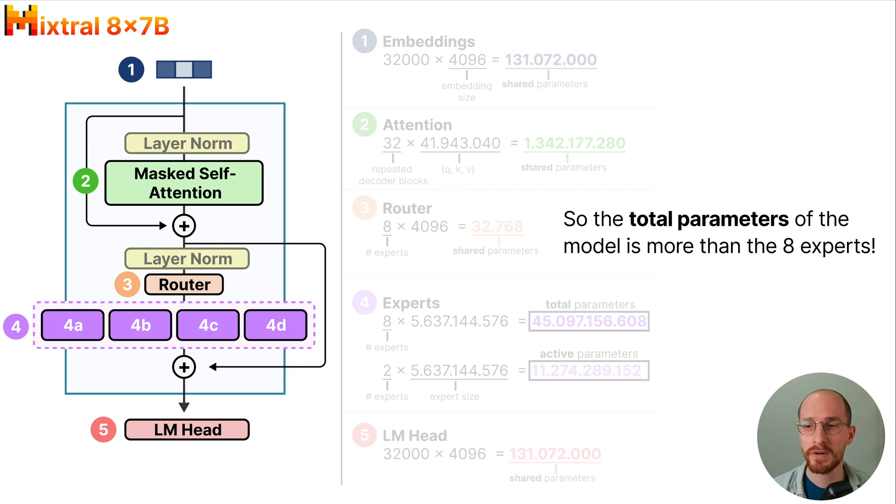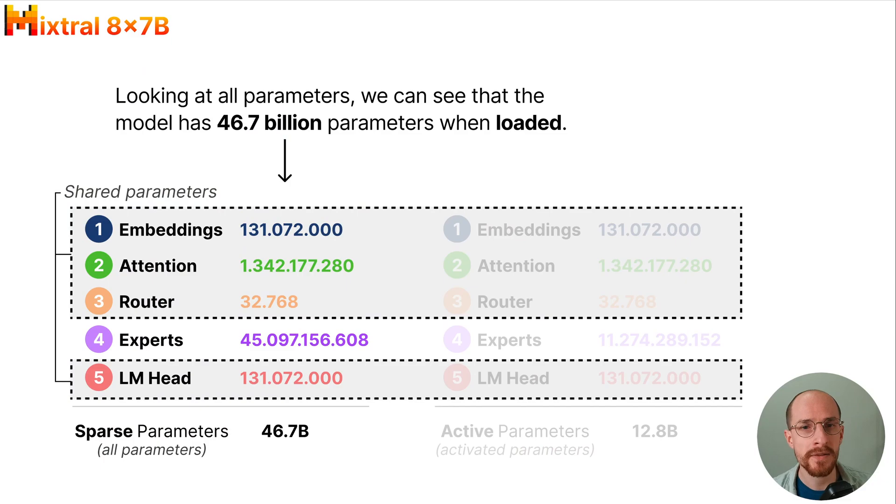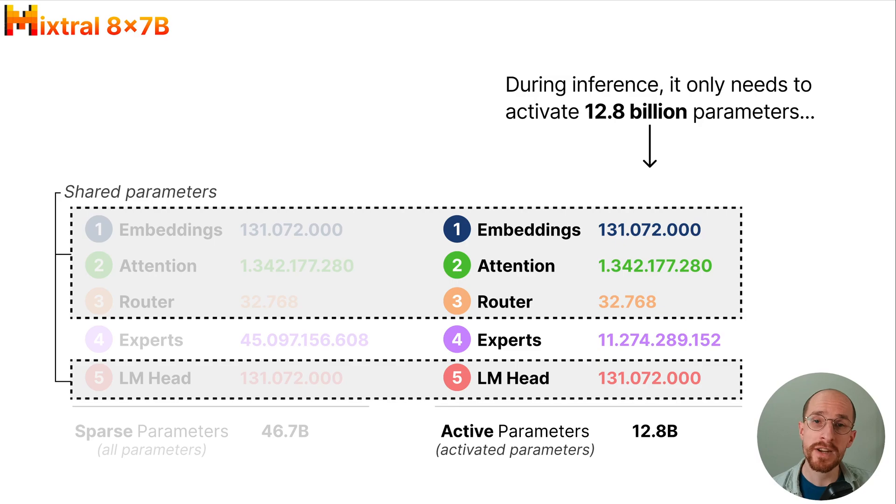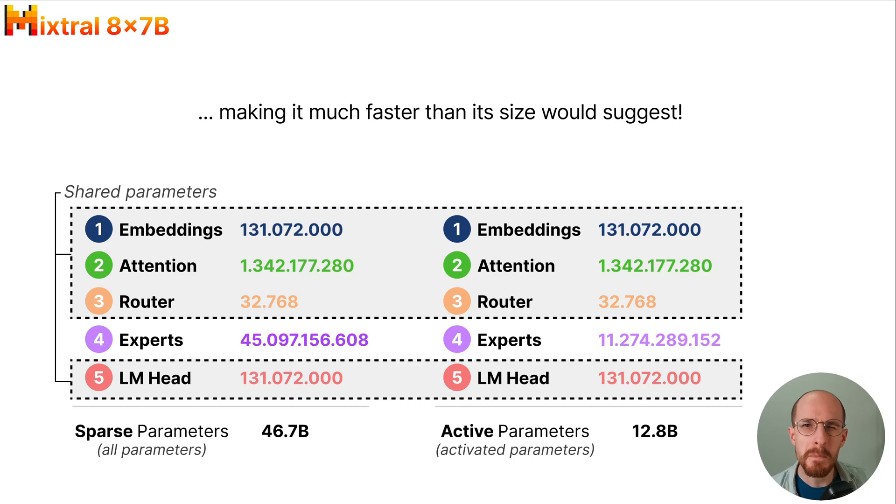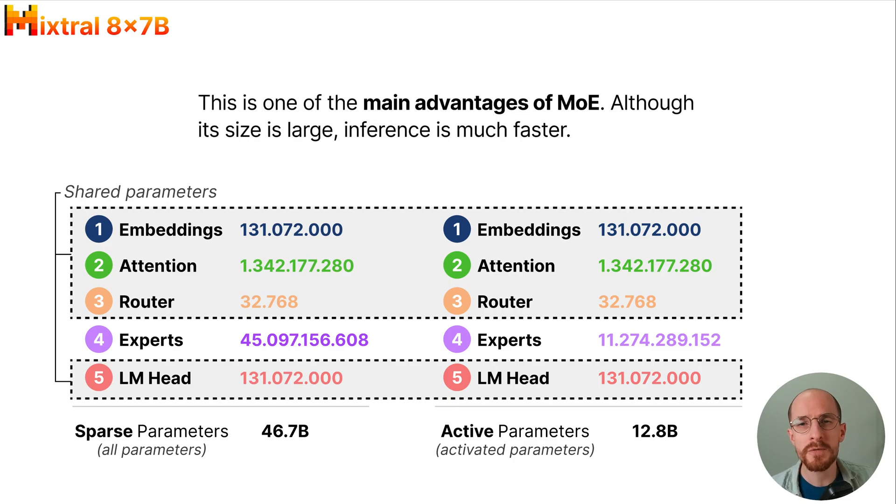So the total number of parameters of the model is more than 8 experts. Looking at all parameters we can see that the model has 47 billion parameters when loaded. During inference it only needs to activate roughly 13 billion parameters, making it much faster than its size would suggest. And this is one of the main advantages of MoE. Although its size is large, inference is much faster.